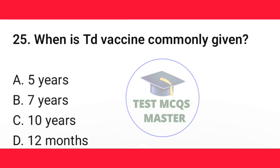Question number 25. When is TD vaccine commonly given? The correct option is C — 10 years.